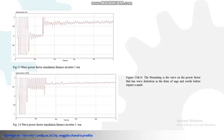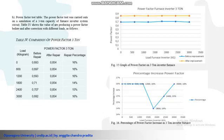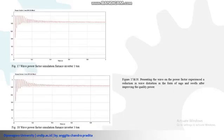The waveform of the power factor shows wave distortion in the form of sags and swells before repairs. The power factor test was also carried out on the simulation of 3-ton capacity of the furnace inverter system circuit. The waveform on the simulation of the power factor shows wave distortion in the form of sags and swells after improving the power quality.